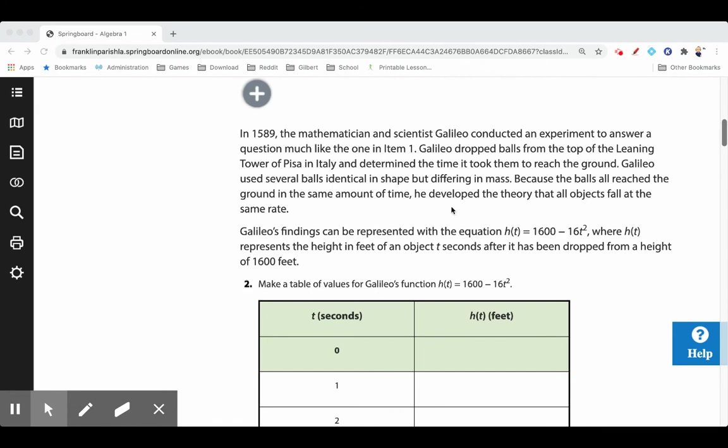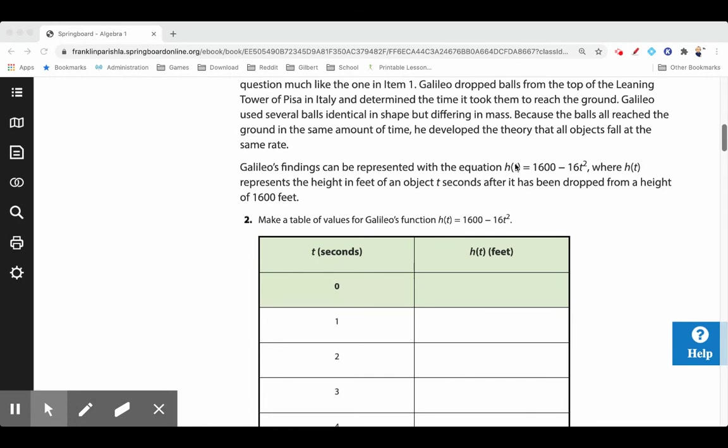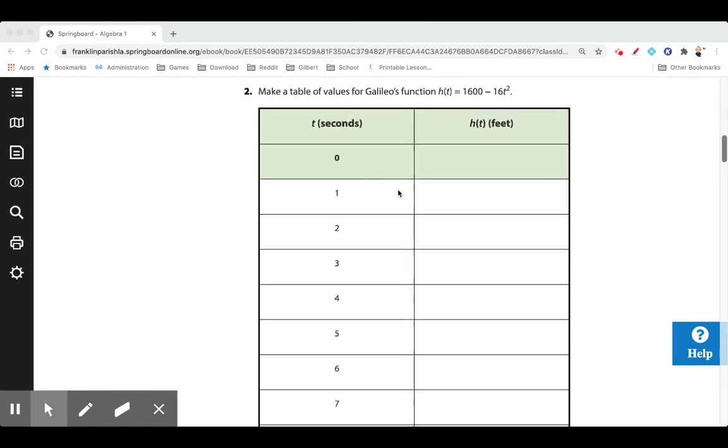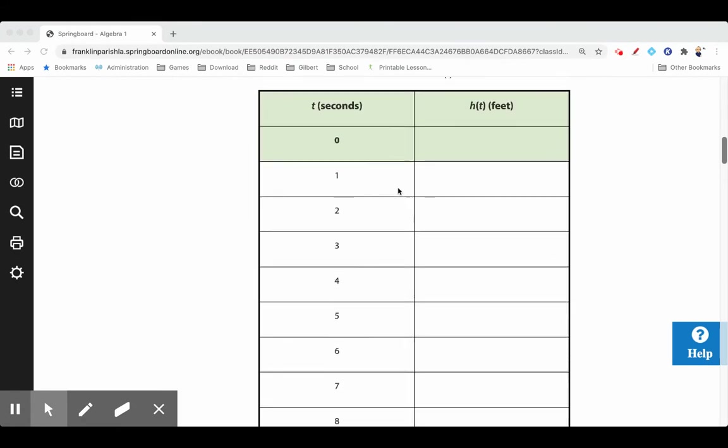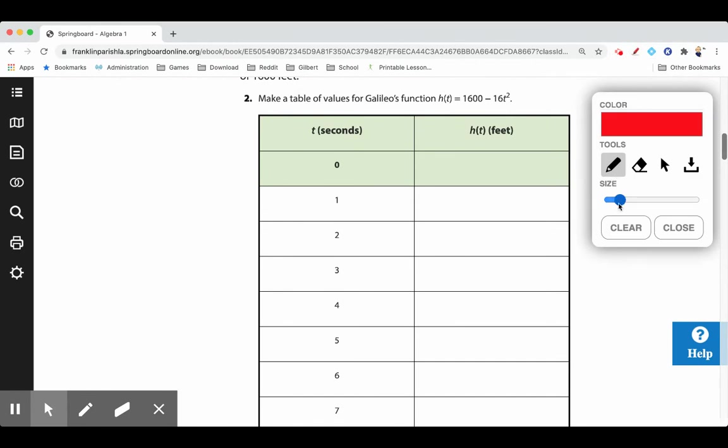Galileo's findings can be represented with the equation H(t)—we're going to use H(t) instead of F(t) just because we're talking about height. Remember, function notation is a way to name functions. H(t) is equal to 1600 minus 16 times t squared. So instead of x, we're using t because we're talking about time. We're going to make a table of values for Galileo's function. Let's think about it: all we need to do is replace the t's with these numbers and work them out. So it'll be 1600 minus 16 times 0 squared, which is 1600. Then 1600 minus 16 times 1 squared, which is 1600 minus 16, or 1584.